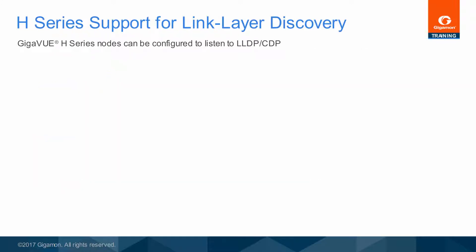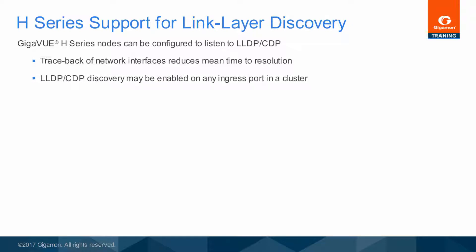Link layer discovery protocol snooping is available on any H-Series node. Remote verification of where traffic is coming from accelerates configuration troubleshooting. Discovery can be individually enabled and disabled on each network port, whether the node is operating stand-alone or is clustered. Each port can store at least two and as many as 20 detected neighbors, depending on how much of the per-chassis list of 2048 neighbors has been consumed.